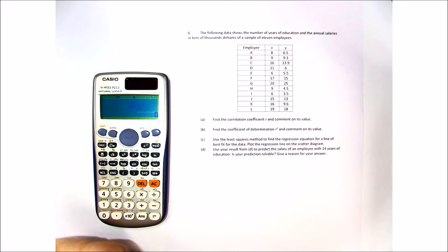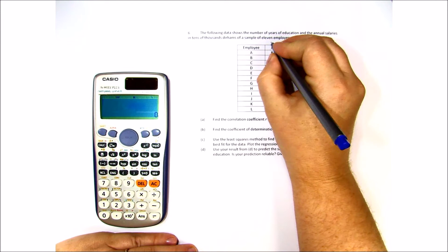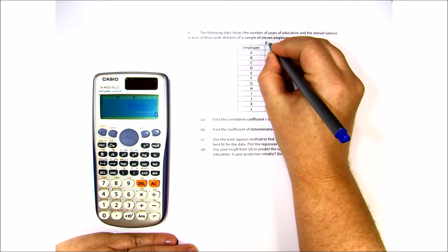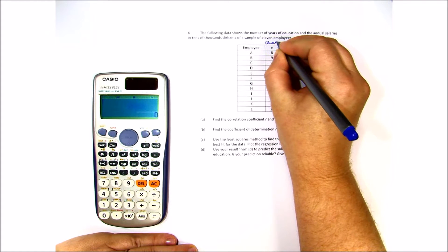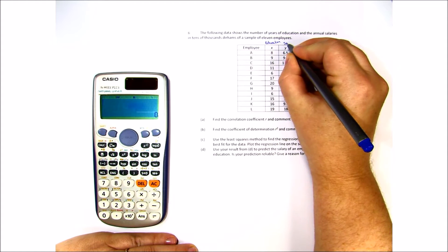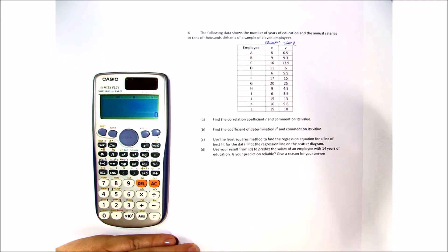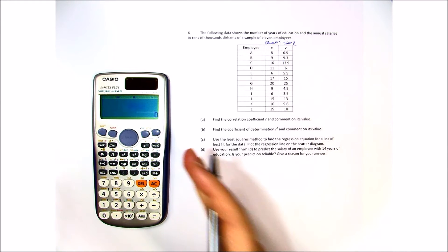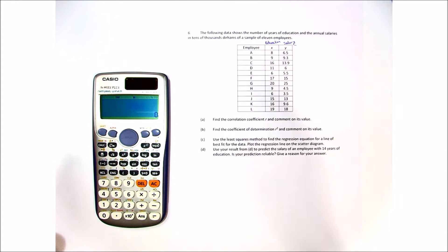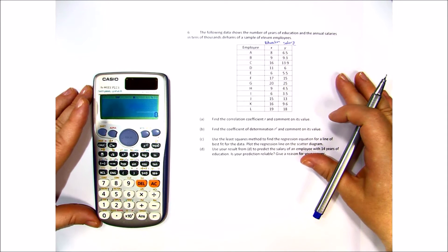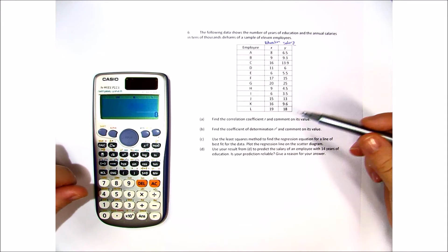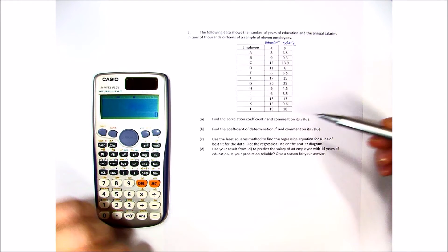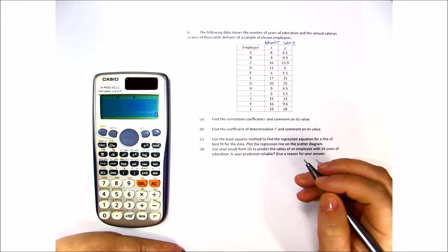So we have x and y. X would be the number of years of education and y would be their salary because education is an independent variable. Salary comes afterwards and is the dependent. Find the correlation coefficient r and comments on its value.